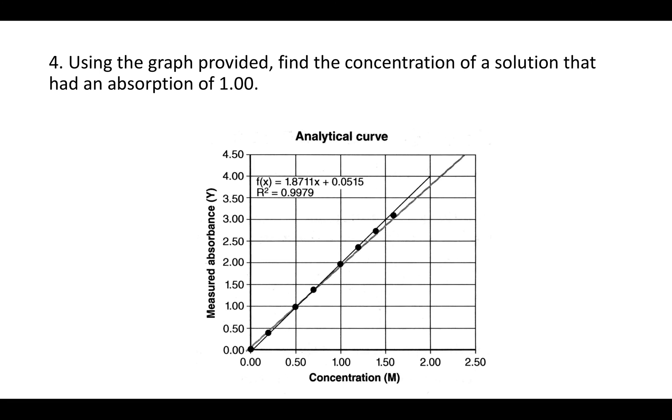Question 4 says using the graph provided find the concentration of a solution that had an absorption of 1. Now the absorption in this graph is on the y-axis and the concentration is on the x-axis. So you would want to go, here they're giving you an absorption of 1, so you're going to go on the y-axis up to 1. Then you go over, see where it hits the line. At that point go down, you can see that here an absorption of 1 would give you a concentration of 0.5.